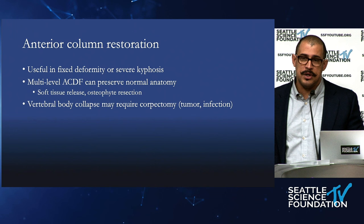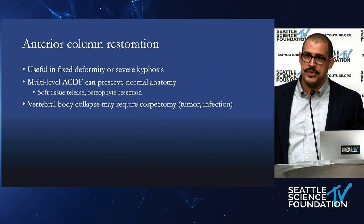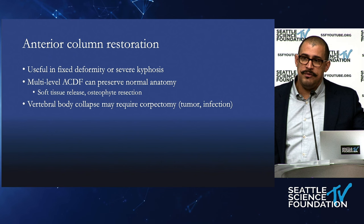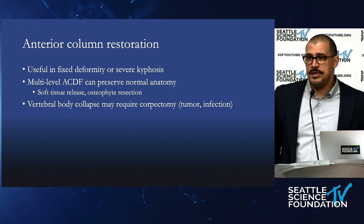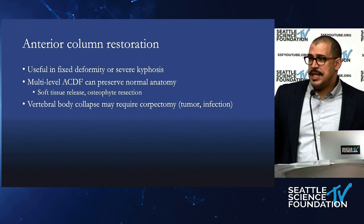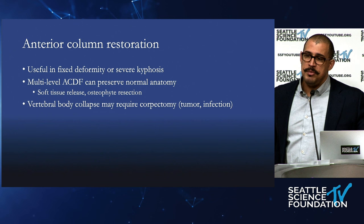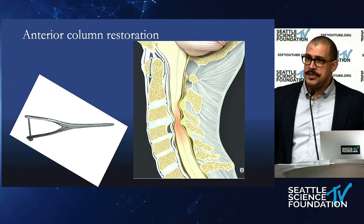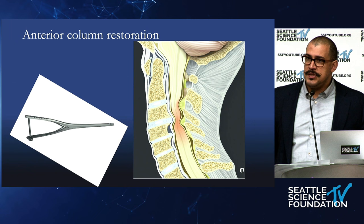Anterior column restoration is obviously very important in fixed deformities. If someone has a fixed kyphosis on flexion-extension, I recommend anterior column work, whether that's multi-level ACDF. I really like that technique for preserving normal anatomy. Focus on soft tissue releases — releasing the uncovertebral joints anteriorly, removing osteophytes before any discectomy — can really start the ball rolling for overall correction. I learned this from arthroplasty technique: using a narrow lamina spreader to really elevate the disc space.